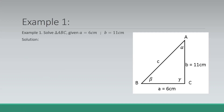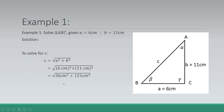Let's solve first for the hypotenuse. To solve for C, we have to use the Pythagorean theorem, so that will be the square root of side A squared plus side B squared — that is 6 squared plus 11 squared — so that is the square root of 36 plus 121, which gives us the square root of 157 centimeters, which equals 12.53 centimeters.